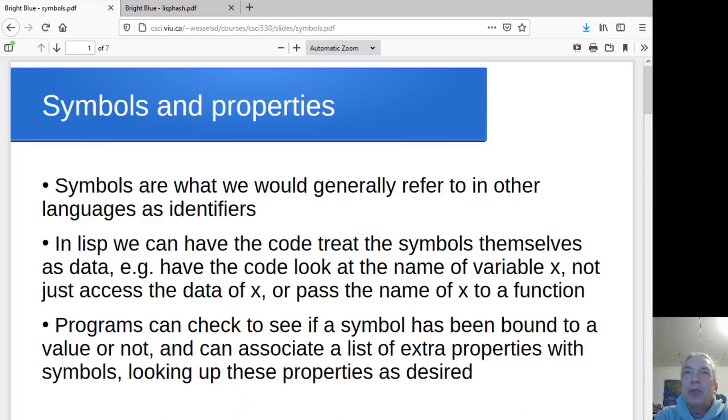Hey folks! In Lisp, we can actually treat symbols as a data type and pass them around. We can store them in variables, pass them to functions as parameters. So not only can I have a variable X, I can look at the name of the variable X within the code. These are what we would typically refer to as identifiers, but we can actually treat the identifiers themselves as code within our Lisp programs.